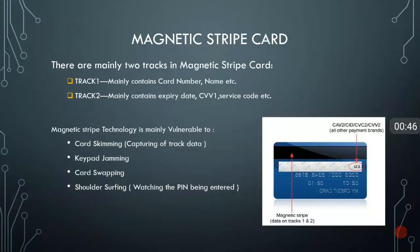Track 2 contains the expiry date, CVV1, service code, and other details. Coming to an interesting fact about this technology — it is mainly vulnerable. The first vulnerability is card skimming: it is basically a hardware device which is inserted at the top of the card reader, and whenever a card is inserted the data is captured and cloned.